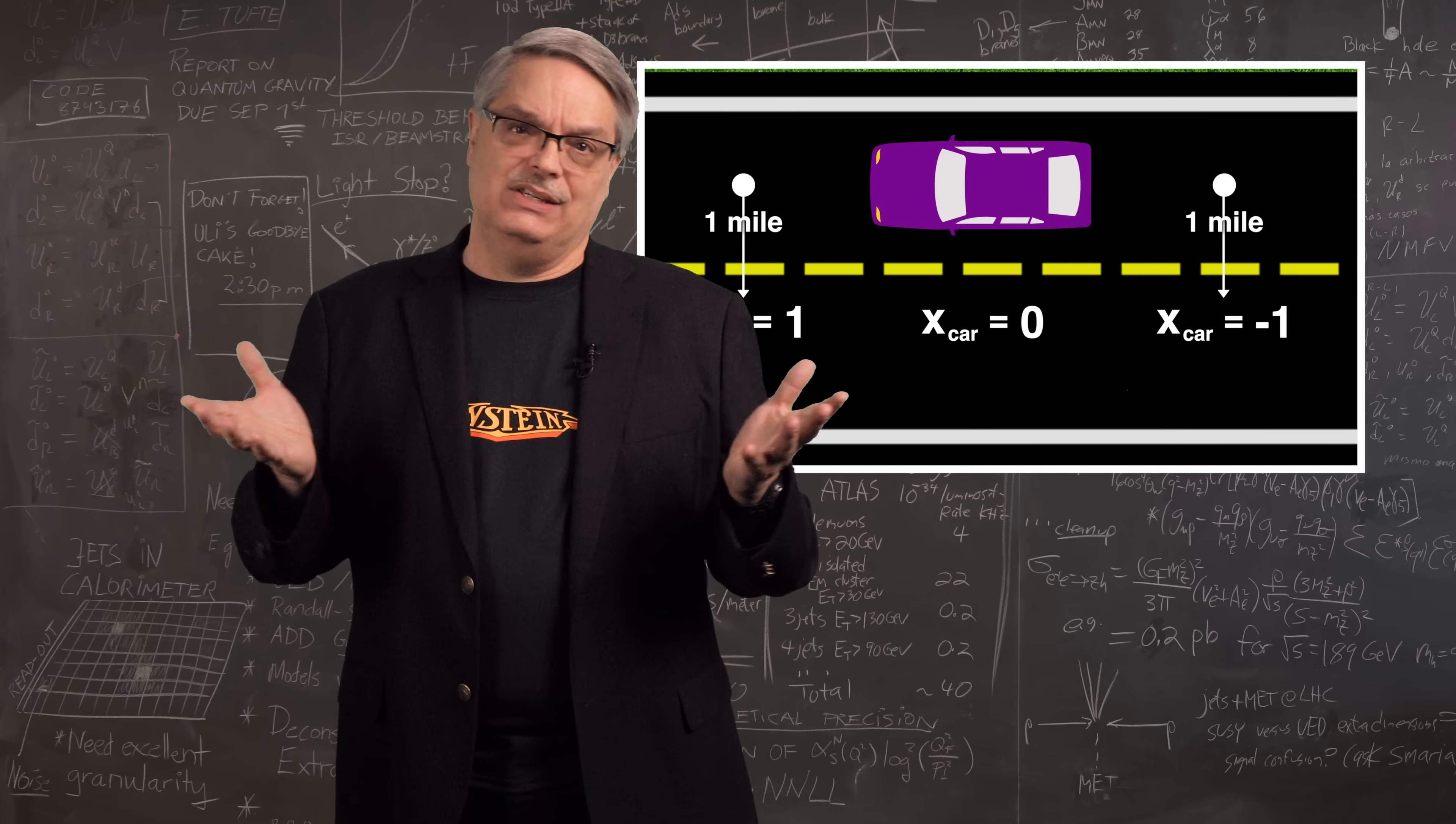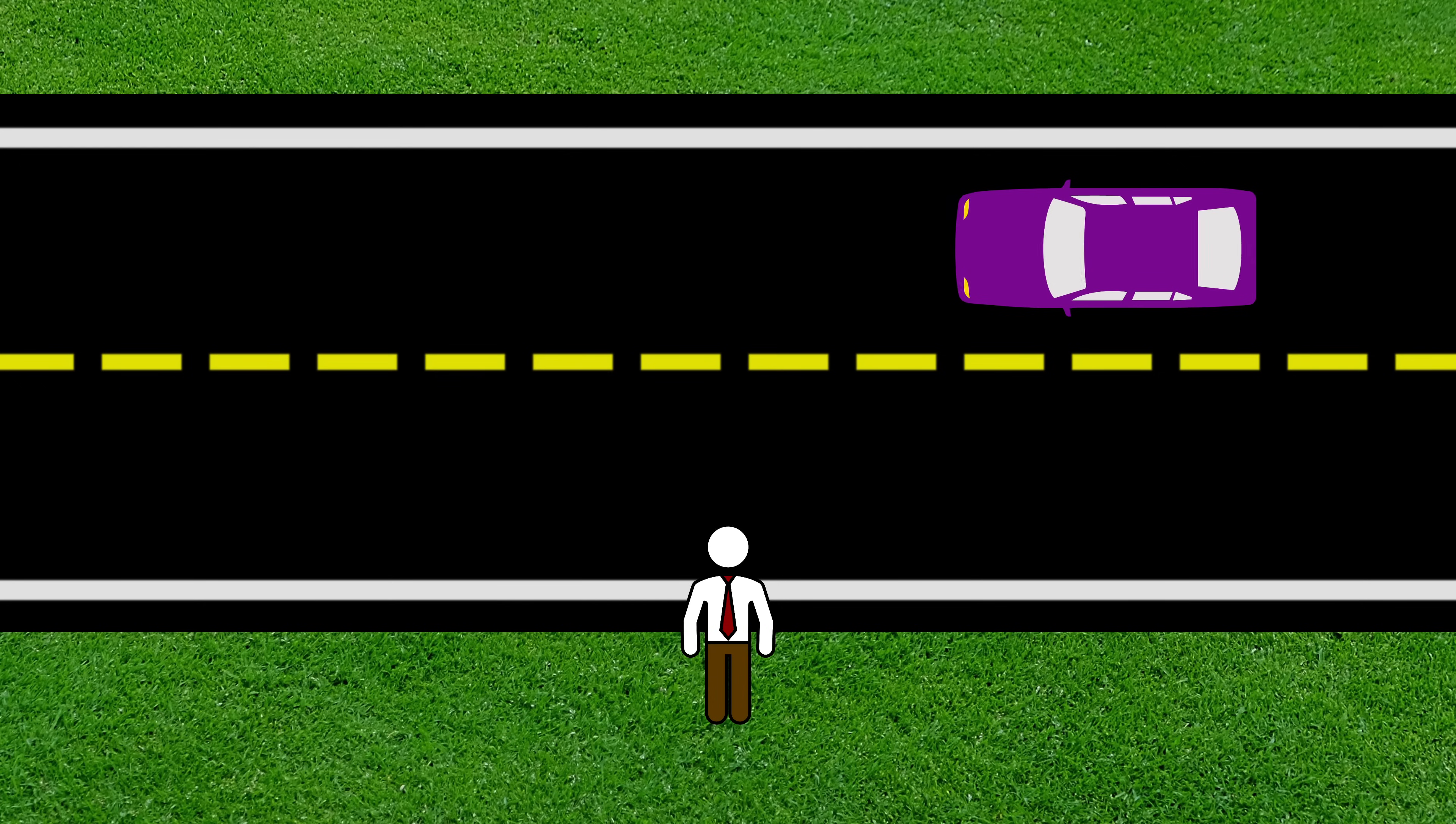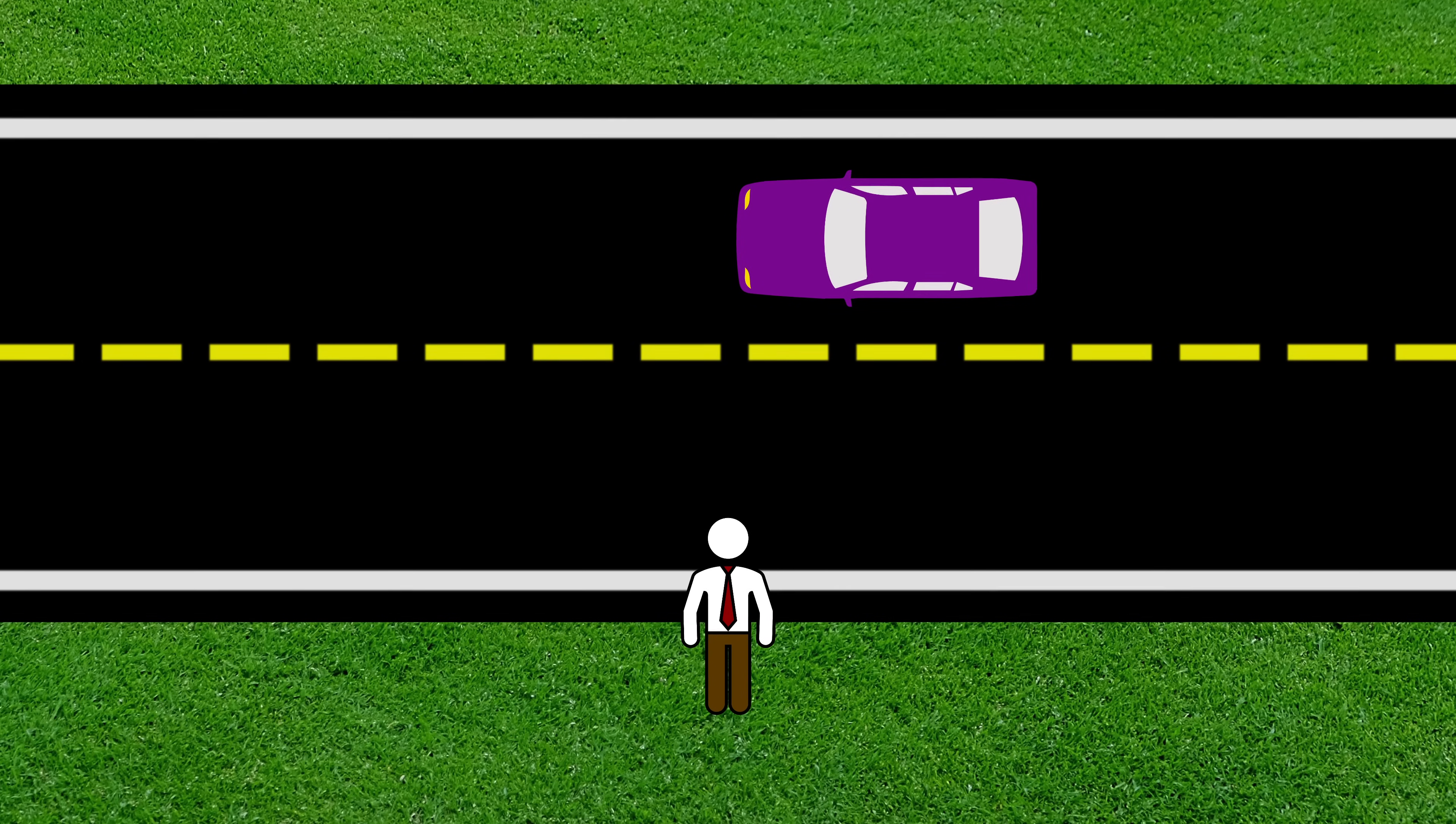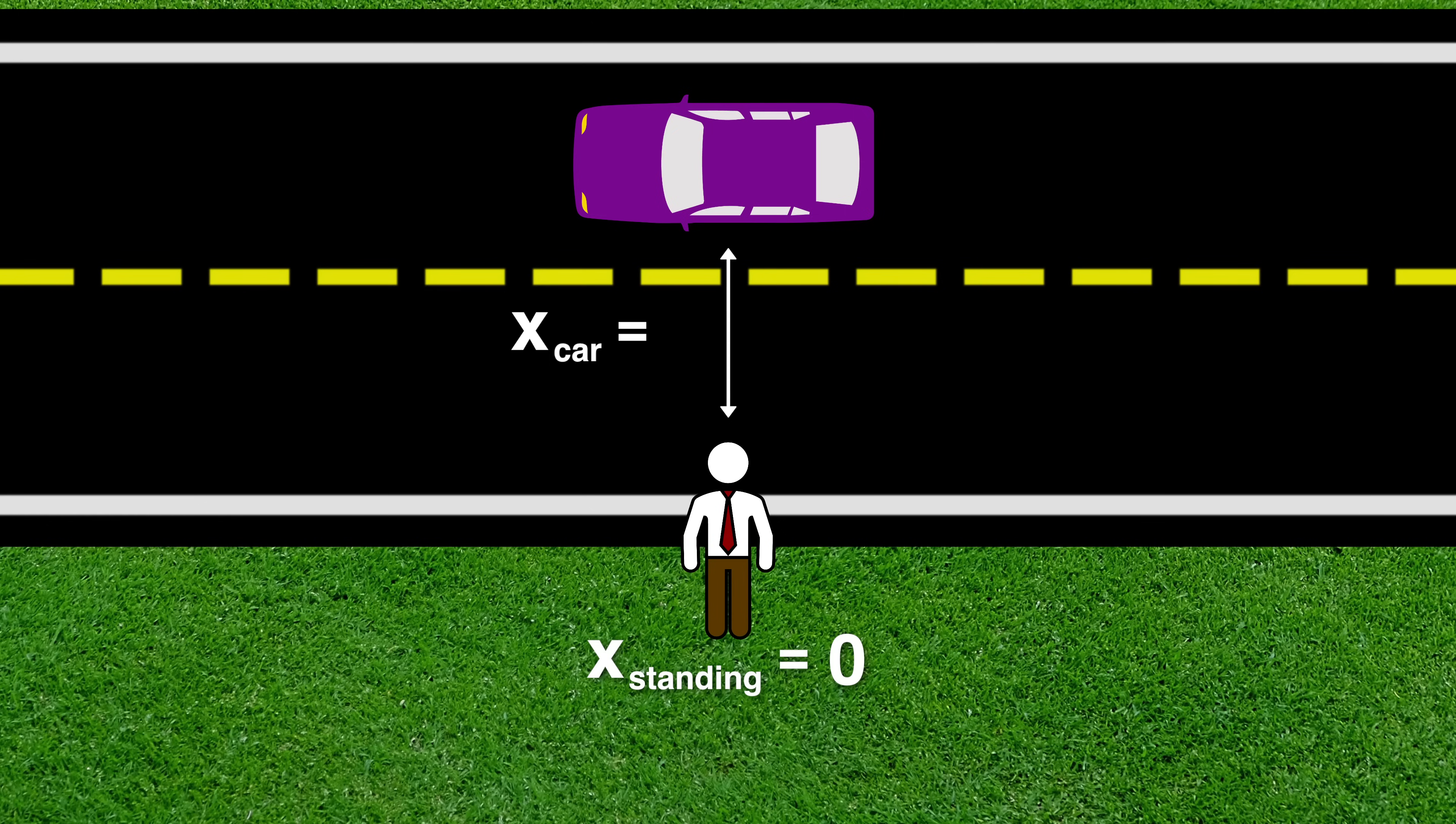How does the standing guy see the same things? Well, the standing guy is also an egomaniac and insists that he is stationary. But he wants to know the location of the car guy and he says that the location of the car guy is changing. So the standing guy says that his location is x substanding equals zero. And that means when the car passes his position, that's the one time they agree on position since they both think that their location is x equals zero and they're in the same place at the same time. We'll get back to time later.